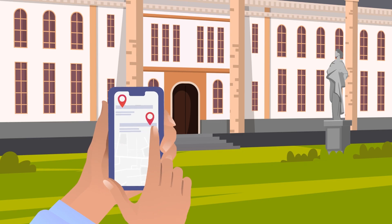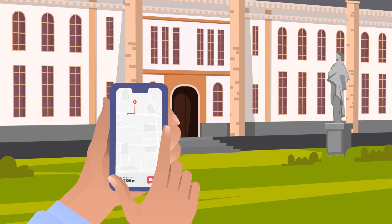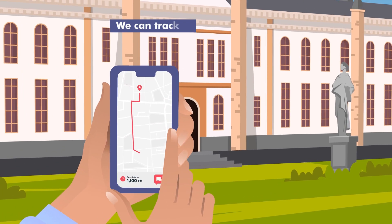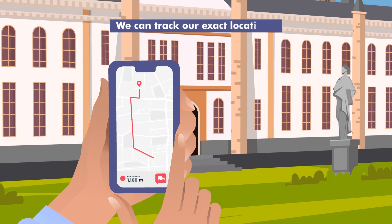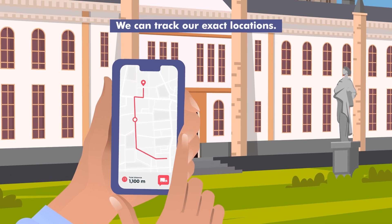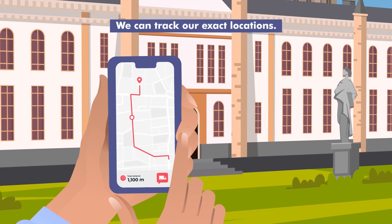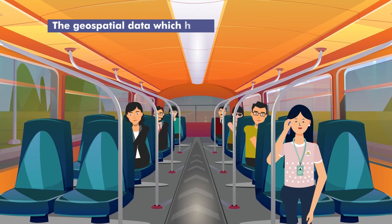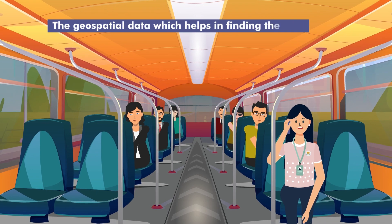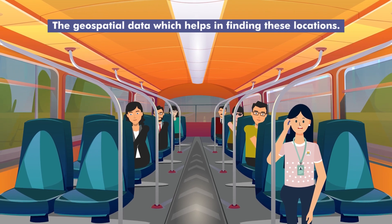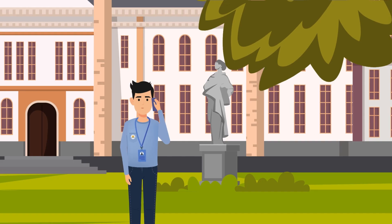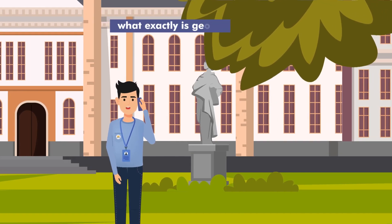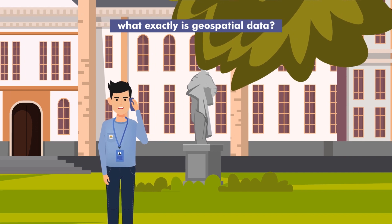It is so amazing how far technology has come that we can track our exact locations. I wonder how this works. Well Vinny, it is the geospatial data which helps in finding these locations. Okay, but what exactly is geospatial data?